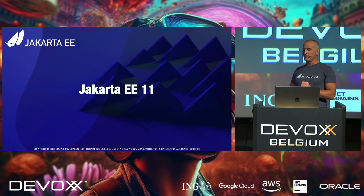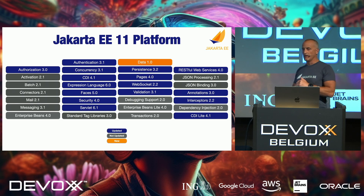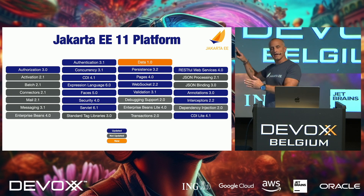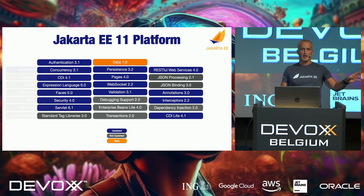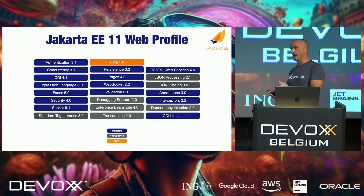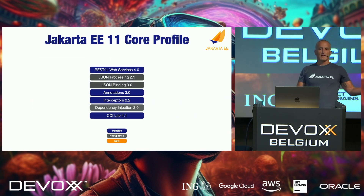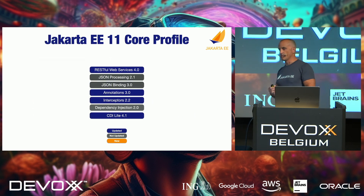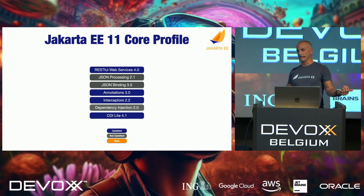Jakarta EE 11 has the full platform, which includes all specifications shown on this slide. If I remove the more enterprise-flavored specifications, we're left with the Web Profile, which targets more traditional web applications. If we take away those for web UIs and general web development, we're left with the Jakarta EE 11 Core Profile — which was introduced in Jakarta EE 10 — and about half of these specifications are updated in EE 11.